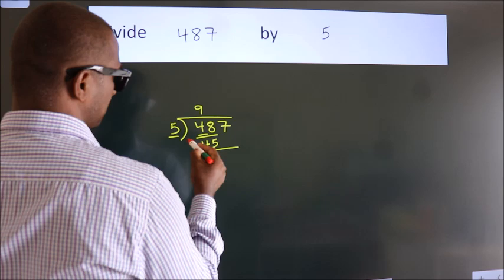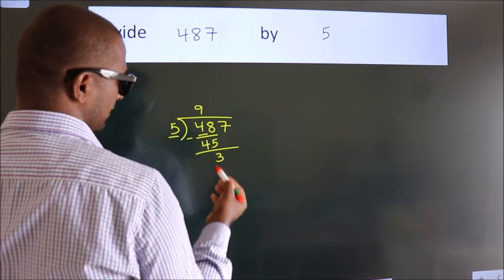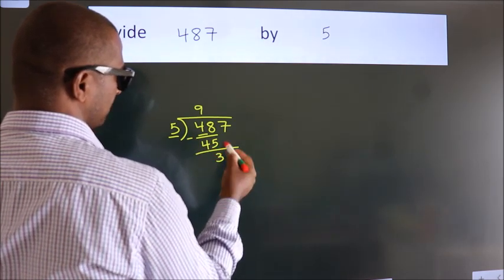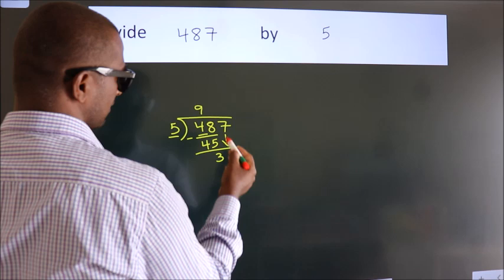Now we should subtract. We get 3. After this, bring down the beside number. So, 7 down.